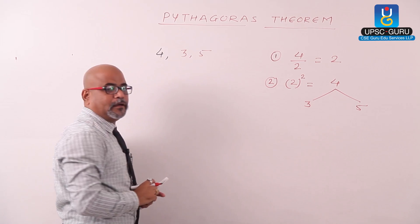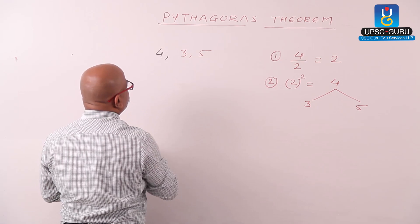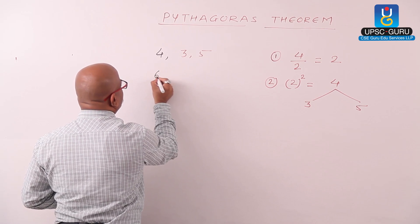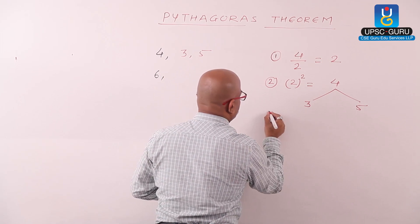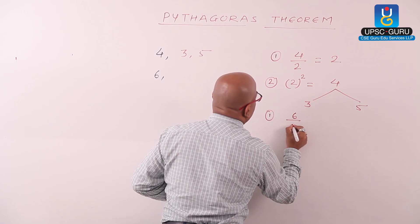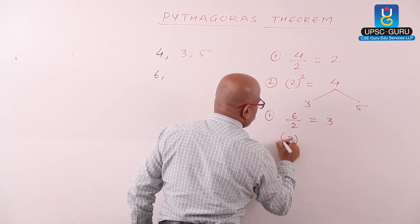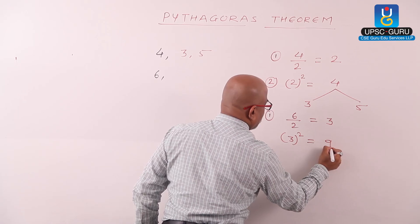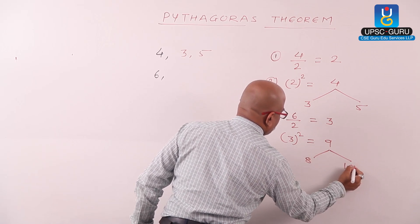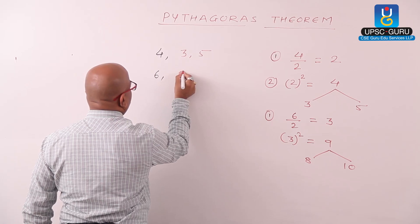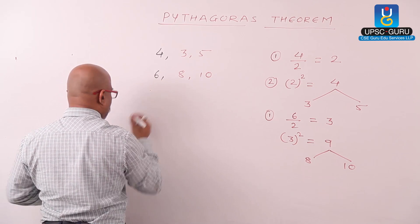One more even number: 6. First step: divide 6 by 2 to get 3. Second step: 3 squared is 9. The number between 8 and 10 is 9, so the remaining two numbers are 8 and 10. Next, let us start with 12.